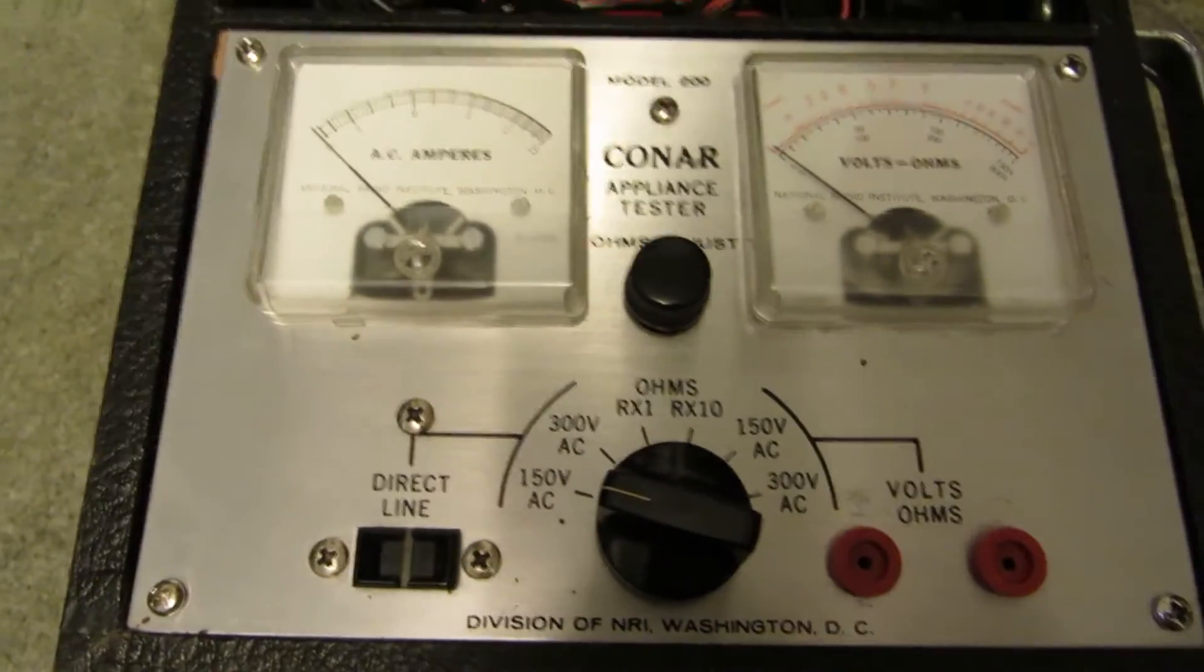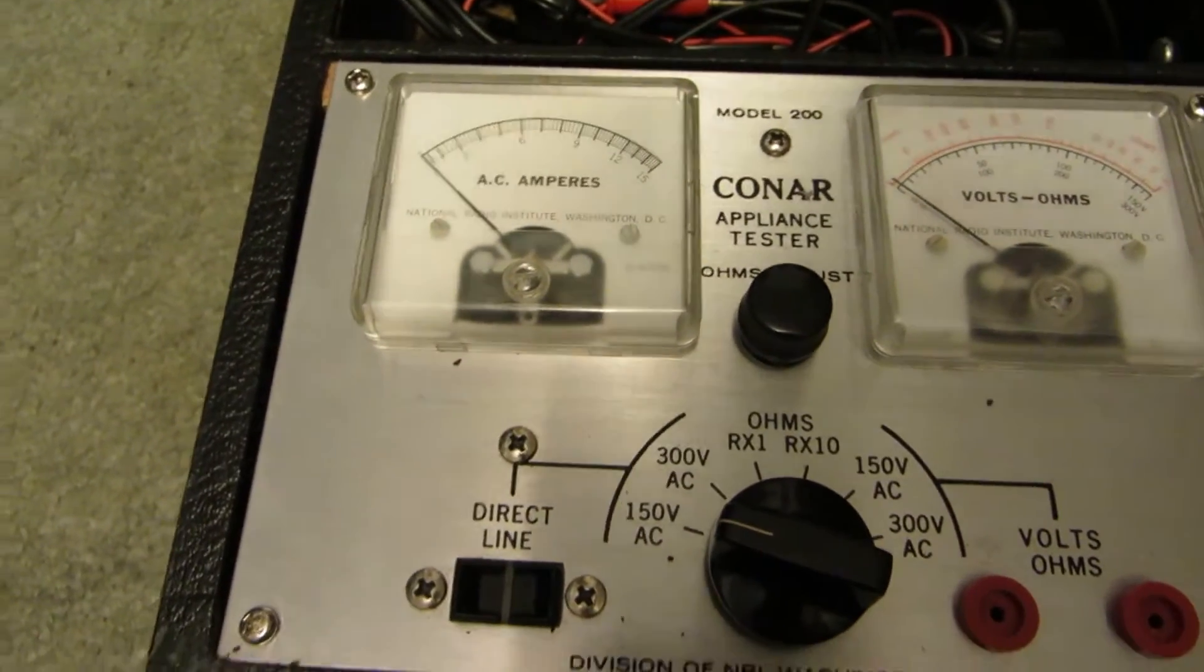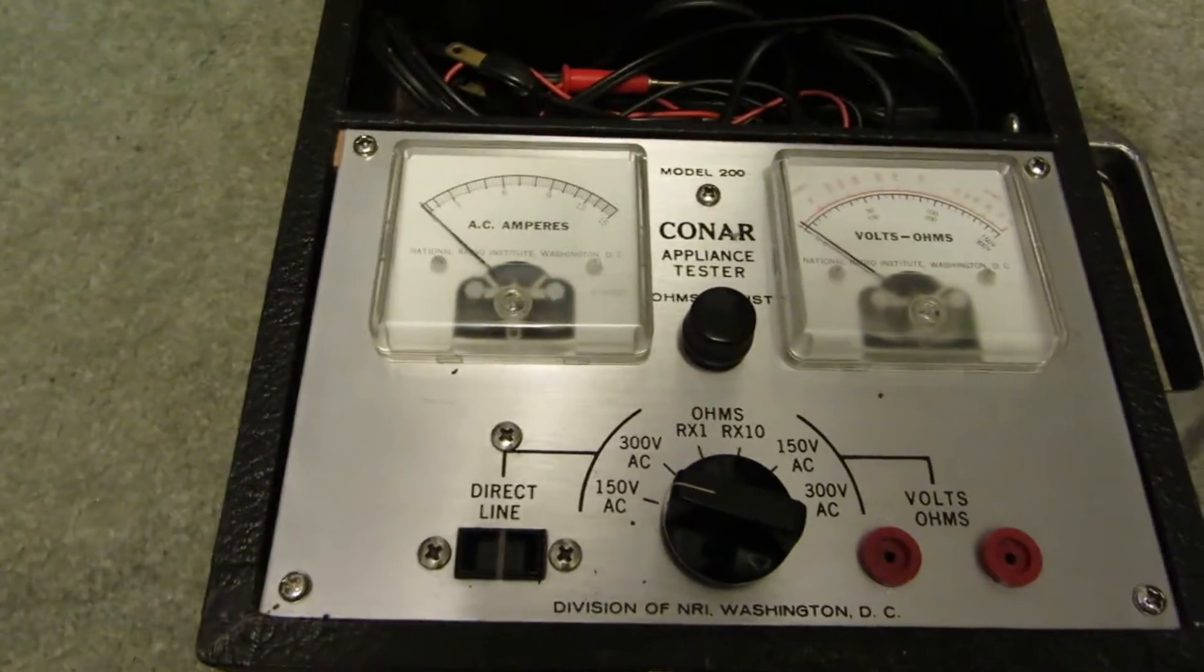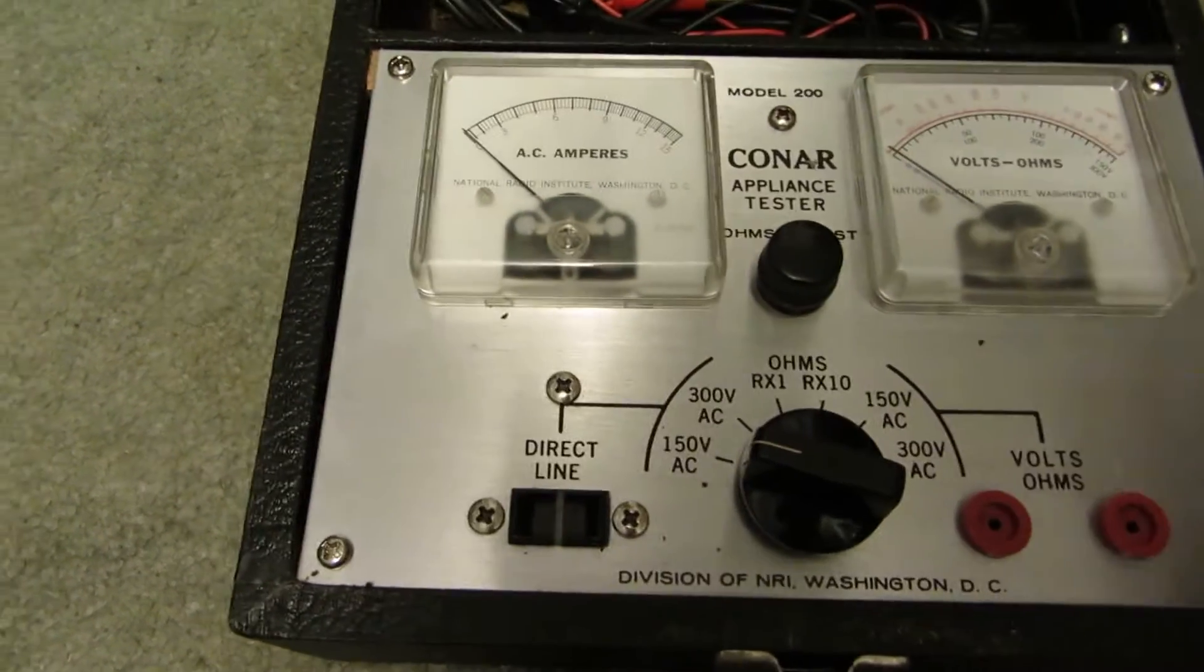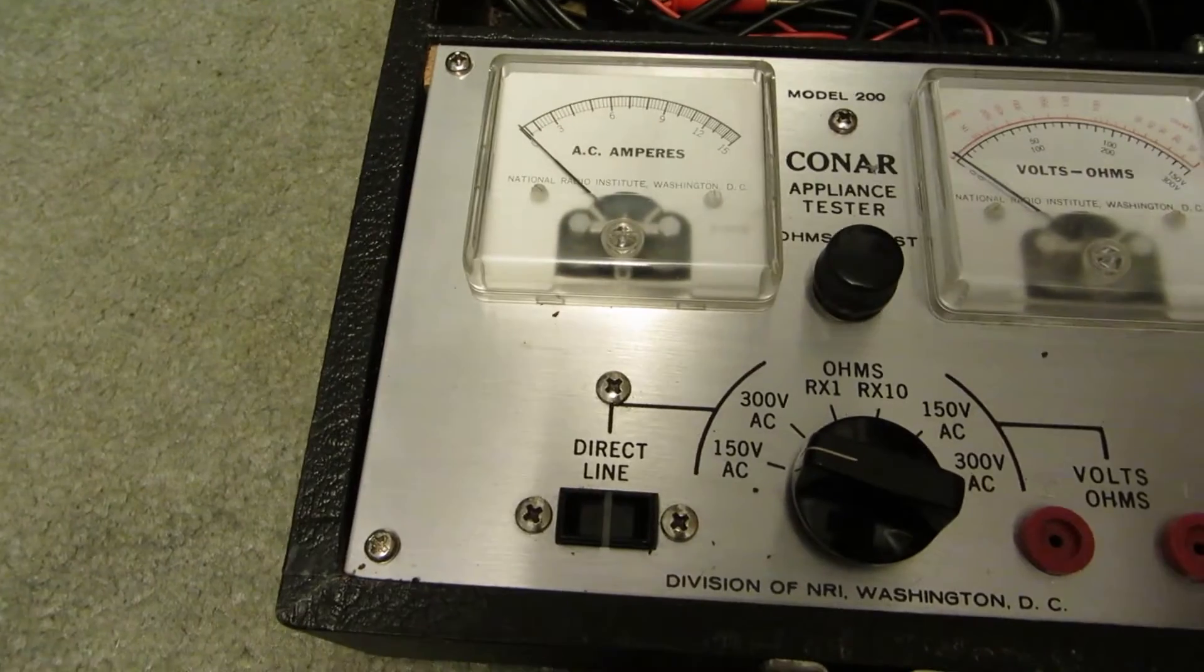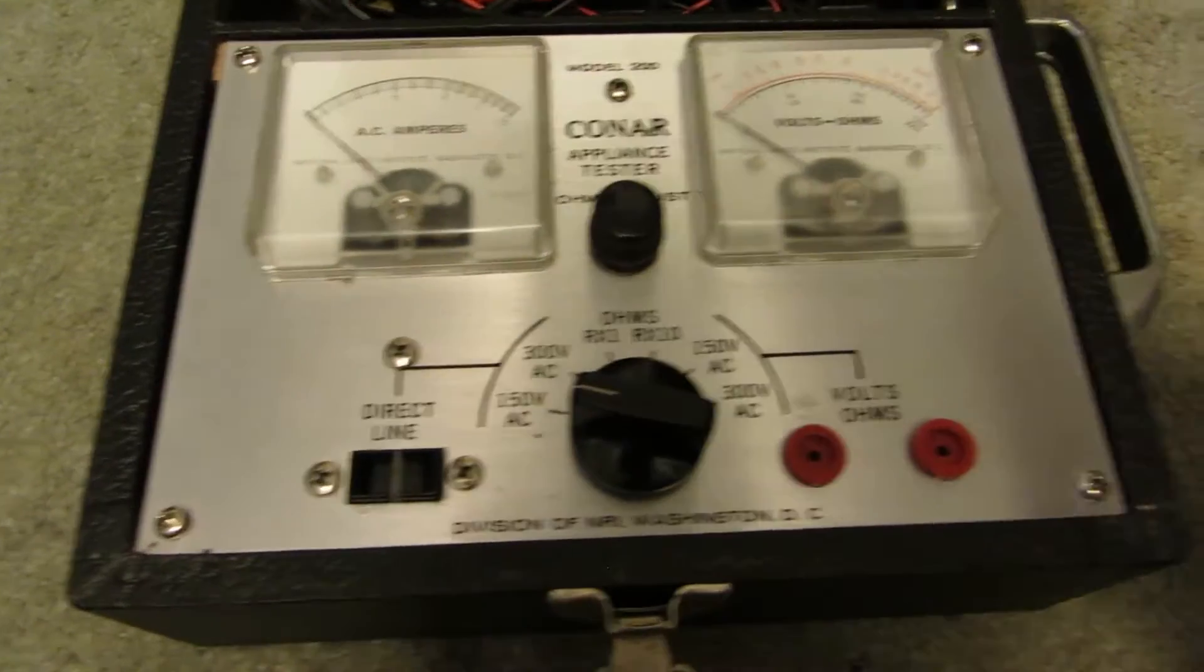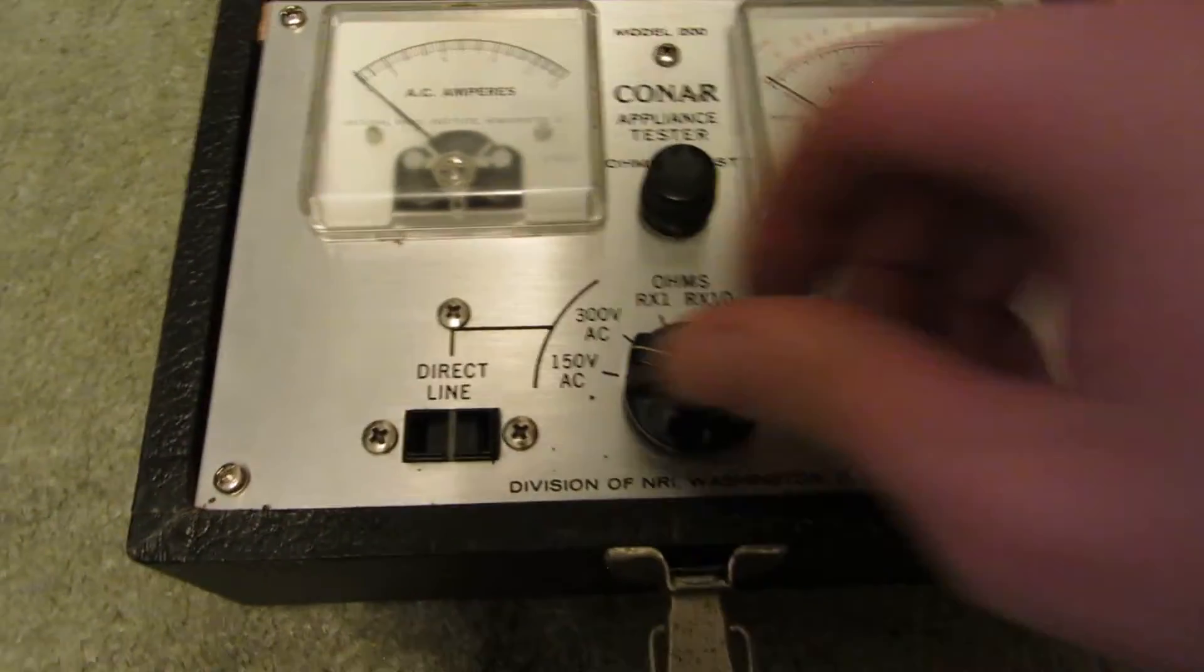Now, back ages ago, back in the 70s and 80s, an appliance technician would actually go around with one of these in their service vehicle. And when you had a problem with a fridge or something, you can take this in and you can check out the basic things. What amps is it drawing, what are the volts, and things like that.